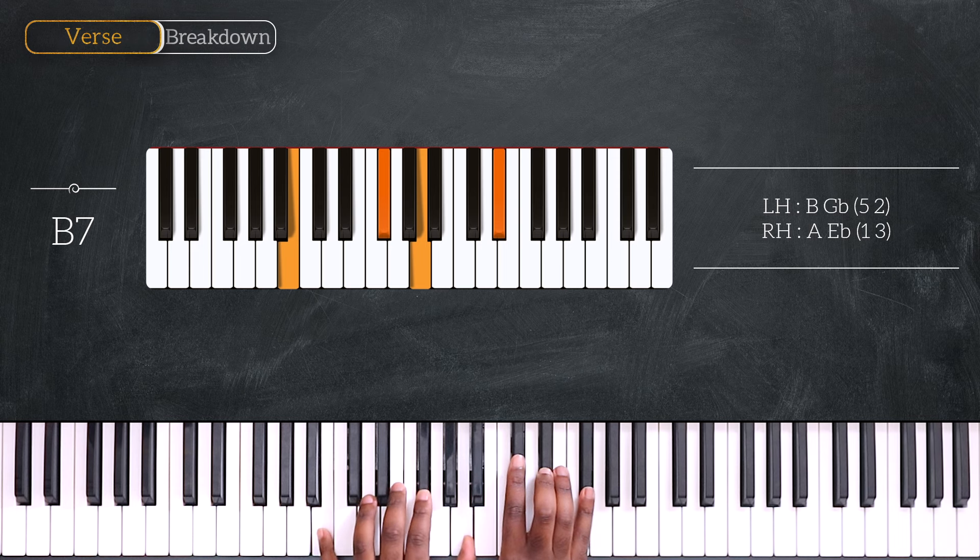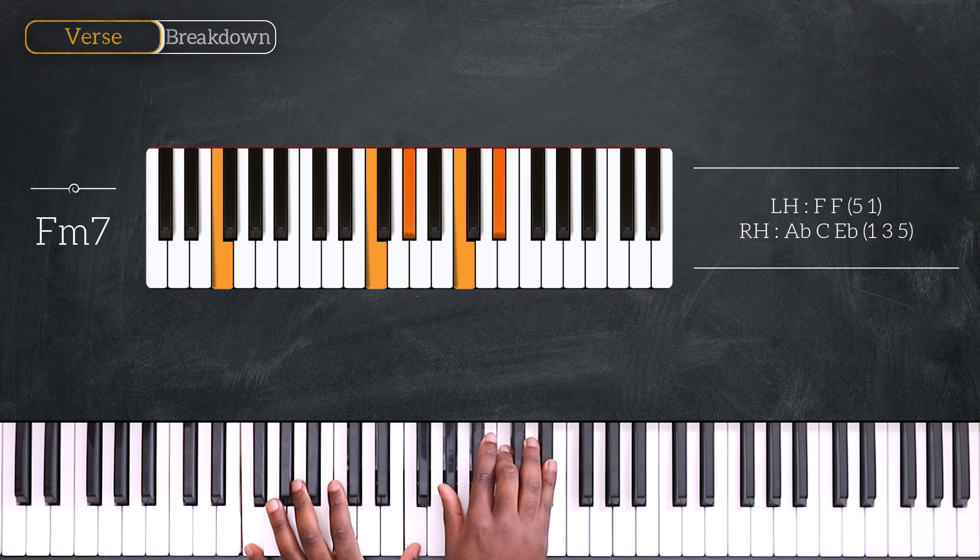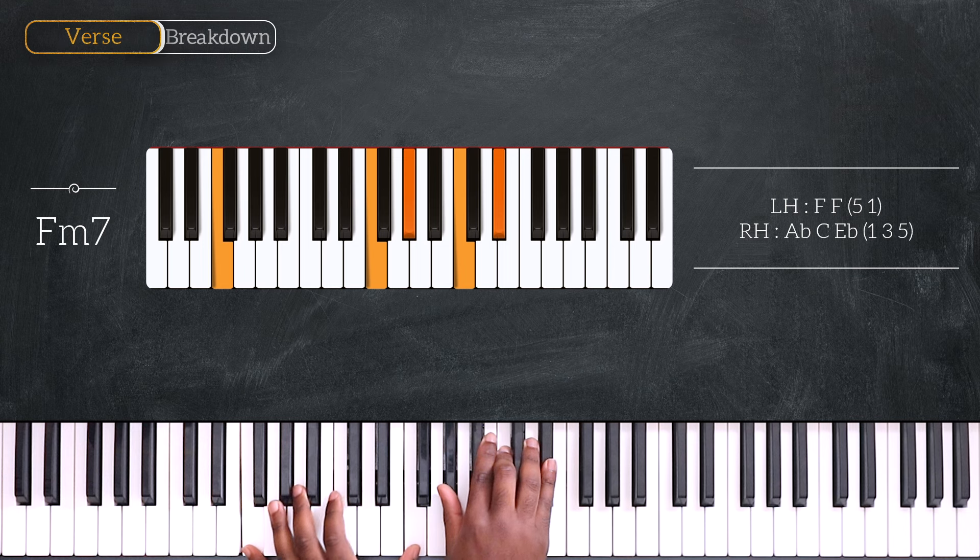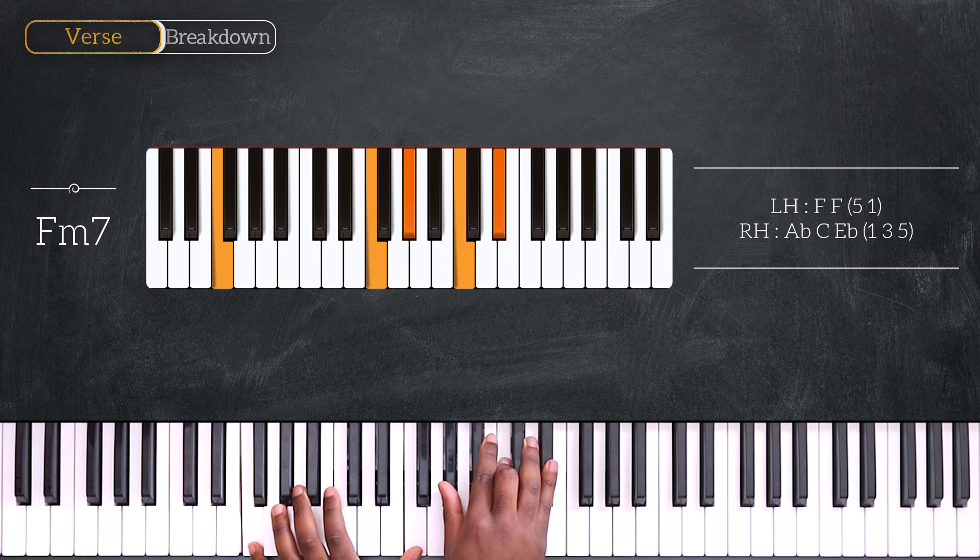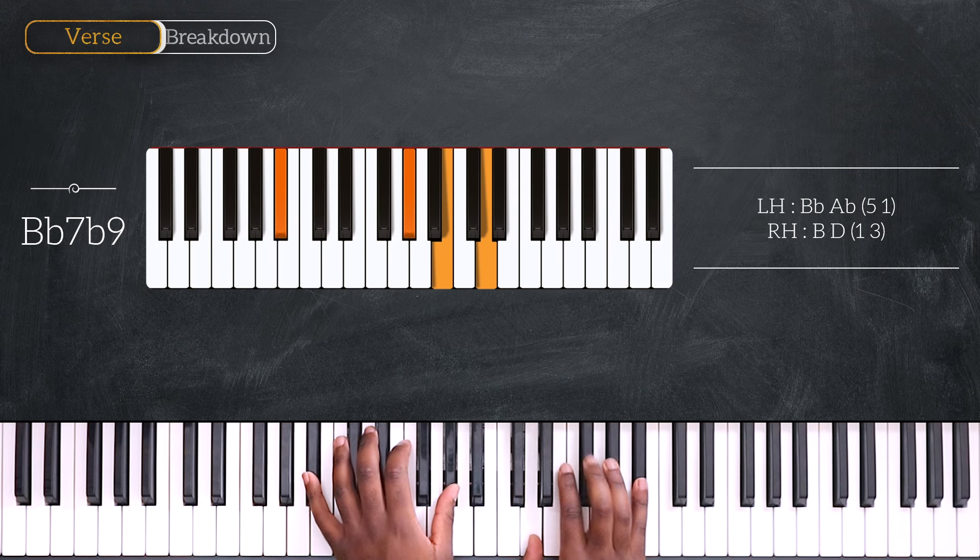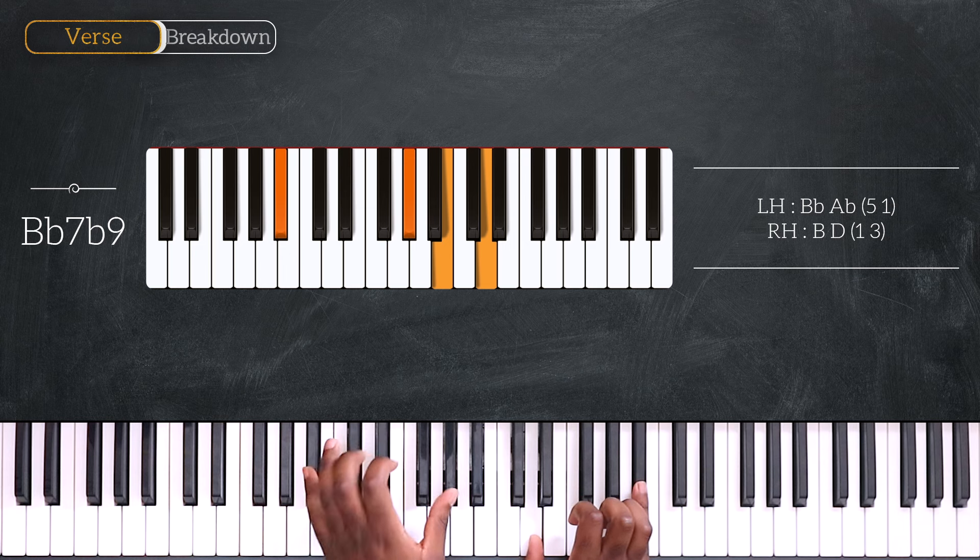Back in the key of Db, we're playing F minor 7 after that, octave F, Ab, C and Eb. Going up a fourth once again, now playing Bb7. Bb and Ab, D and Bb.